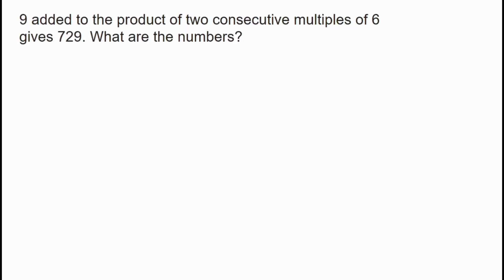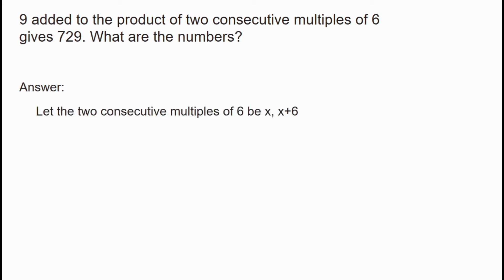Welcome back to our YouTube channel. 9 added to the product of 2 consecutive multiples of 6 gives 729. What are the numbers? We let the consecutive multiples of 6 be x and x plus 6.